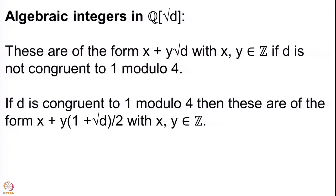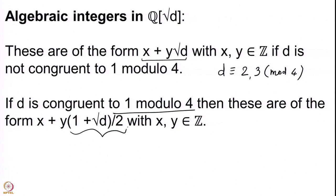When we look at Q(√D) there is a nice description of algebraic integers: elements of the form x + y√D where x and y are integers, provided D is not congruent to 1 modulo 4. If D ≡ 2 or 3 mod 4, those are the algebraic integers. If D ≡ 1 mod 4, then (1 + √D)/2 is also an algebraic integer, and a general element has the form x + y·(1 + √D)/2, equivalently u + v√D where u and v are integers or half-integers.